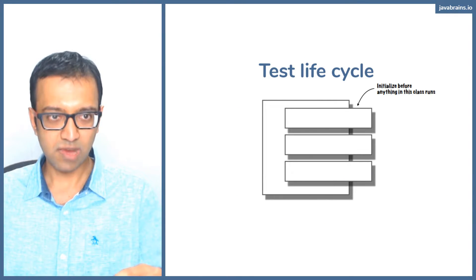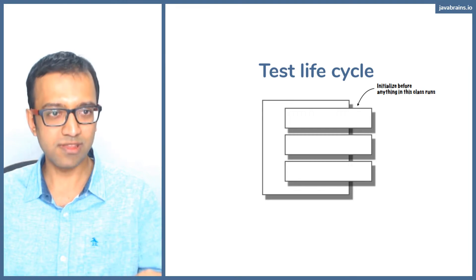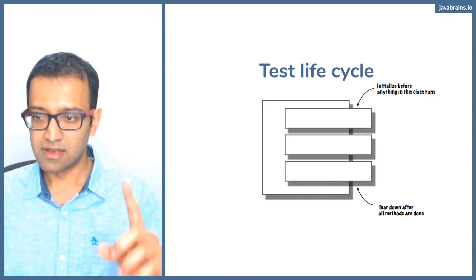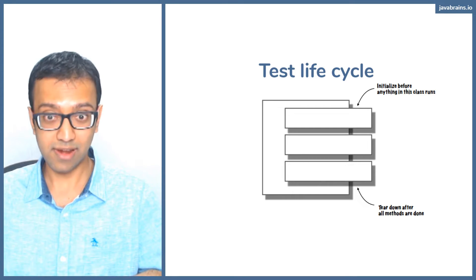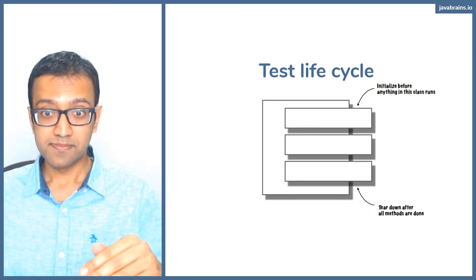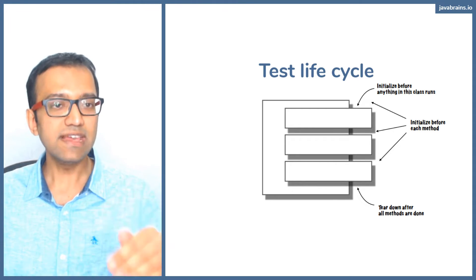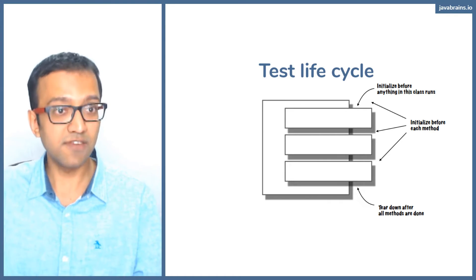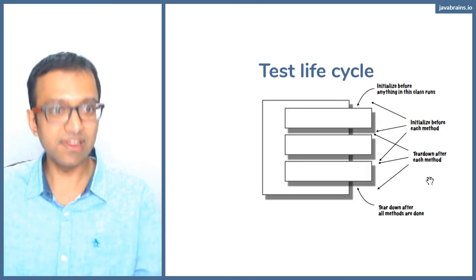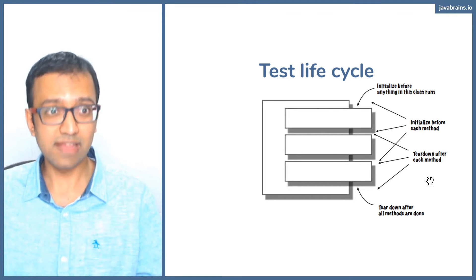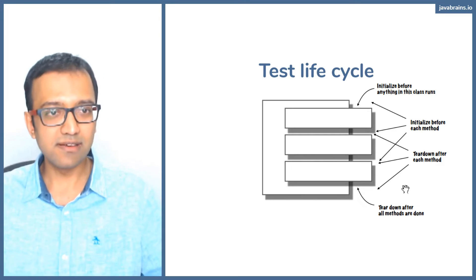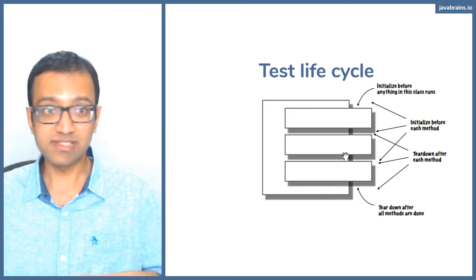You have a class with multiple methods: you can initialize code just once at the very beginning of the class no matter how many methods you have, and you can have some code execute at the end of the class. You put those hooks there. You also have initialization code that needs to run for each method — three methods means it runs three times at the beginning of each. Similarly, you have teardown code: after each method you want certain things to execute, and this runs as many times as you have methods. These are the lifecycle hooks that JUnit provides.